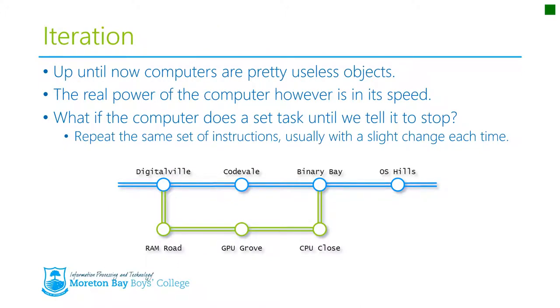Up until now, computers are pretty useless objects where we have to type in every single line of code, and because it takes so long to type each line, it's really a waste of time. The real power of the computer however is in its speed. While it takes a while for us to type those lines, they can execute very quickly. So if we can set up a computer that does a set task over and over again until we tell it to stop, we're going to use that speed.